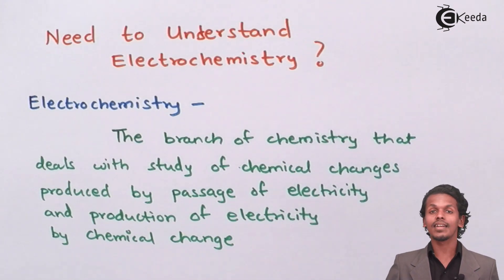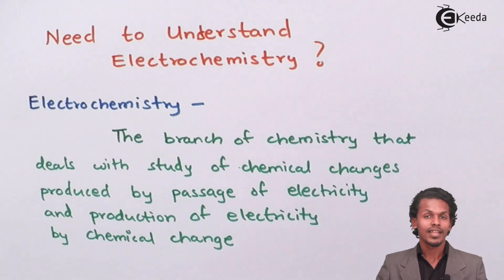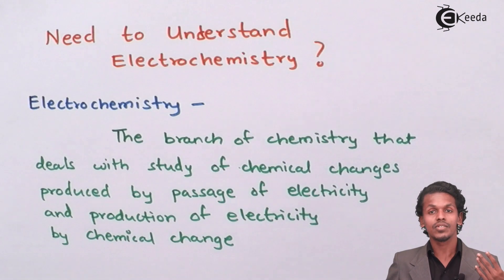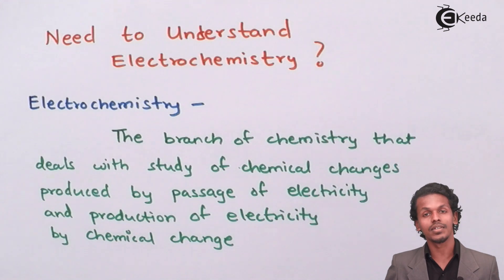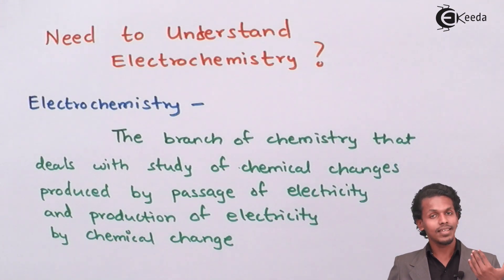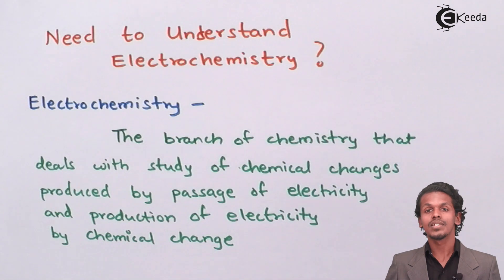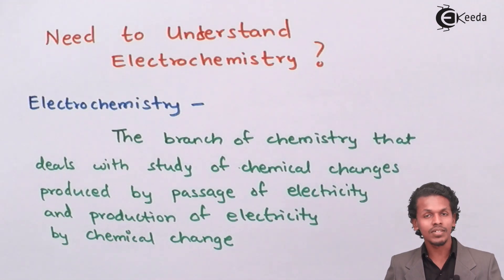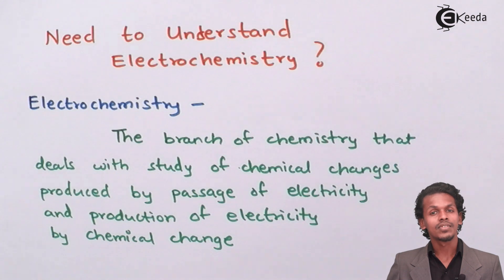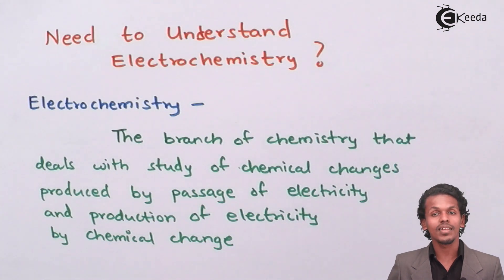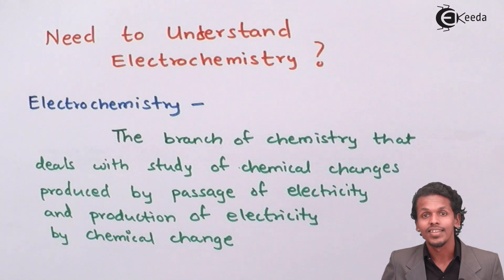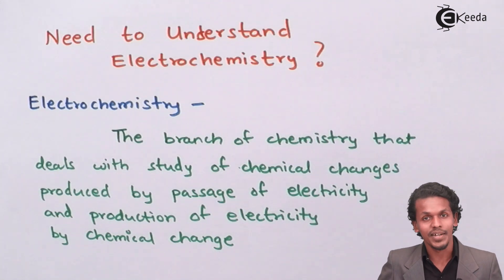Let me give you an example of batteries. Batteries run on electrochemistry. We have also used solar panel batteries nowadays, in which electrochemistry is involved and silicon semiconductors are being used. So this is what electrochemistry deals with, and there is much more that we are going to learn ahead.